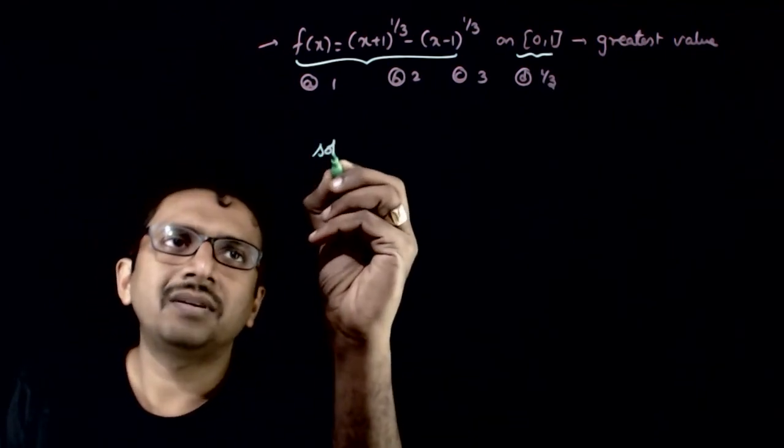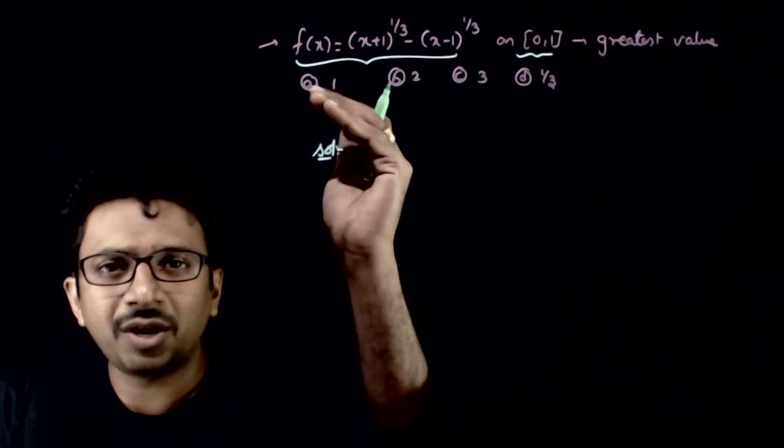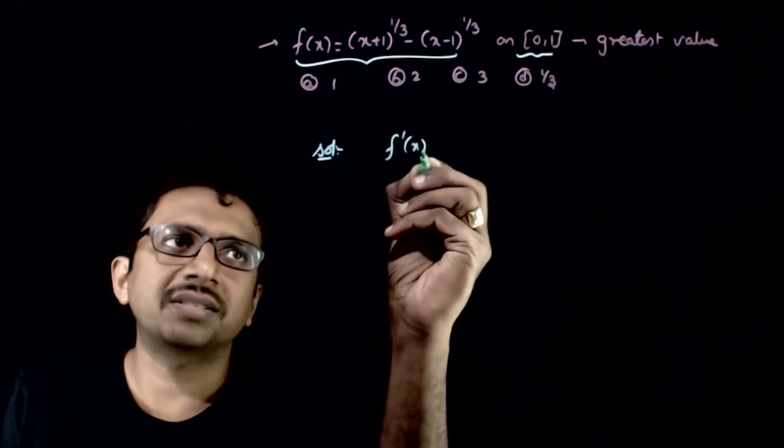Now let us see whether you have any maxima or minima, local maxima or local minima of this function in this interval. To do that, let us find f dash of x.